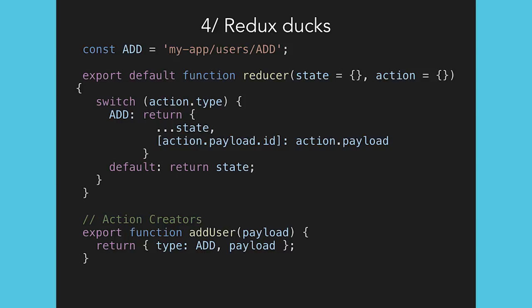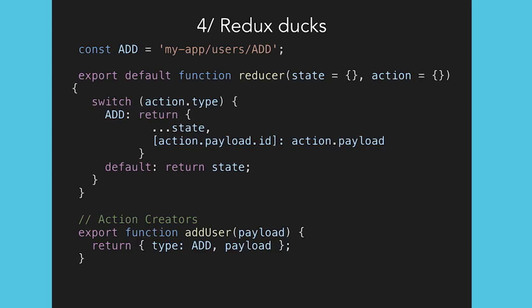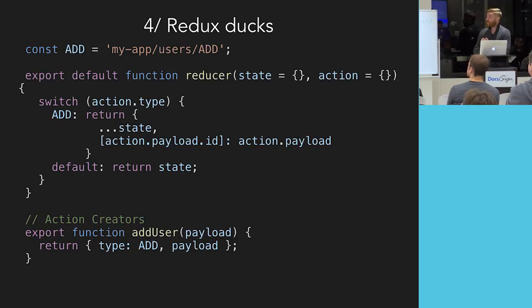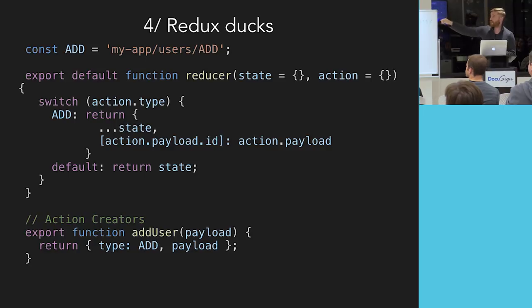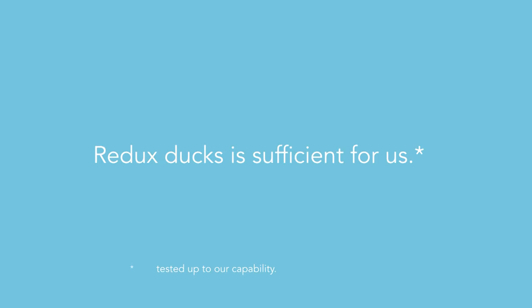A Redux Ducks module looks more or less like this. You export by default the root reducer — if you have secondary reducers, they need to be already plugged in. You export as functions the action creators we talked about earlier. Something I particularly like with Redux Ducks is that we don't expose the different action type constants externally. They stay within the duck and don't need to be exposed because the reducer and the action creators are both in the same file. Redux Ducks was sufficient for us and works great — up to 20-30 modules, it still works perfectly.